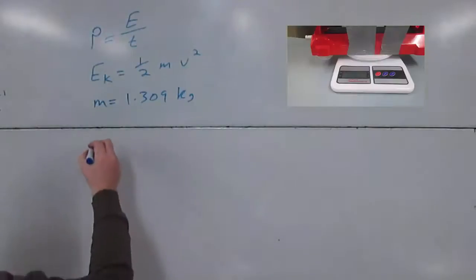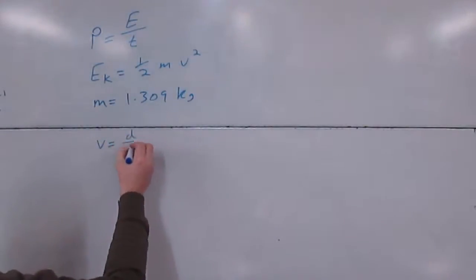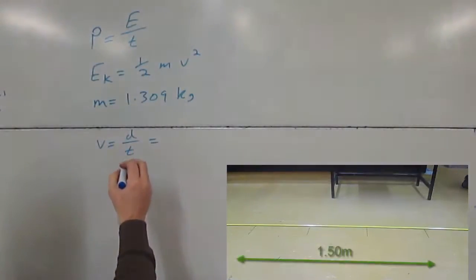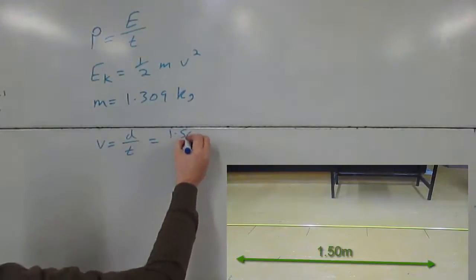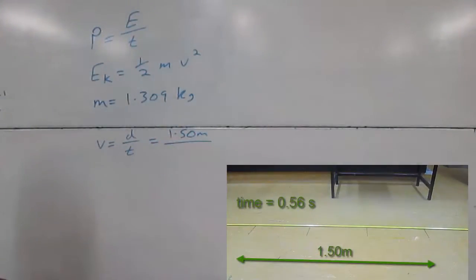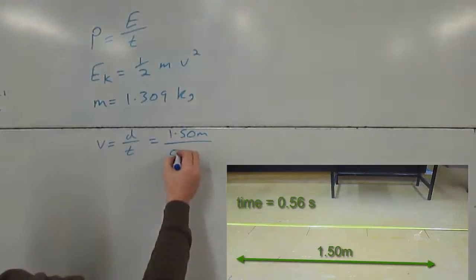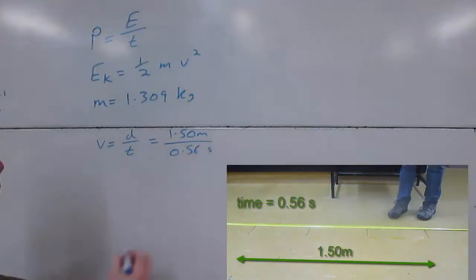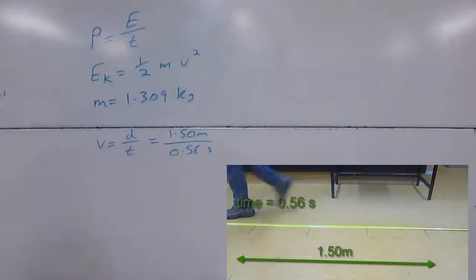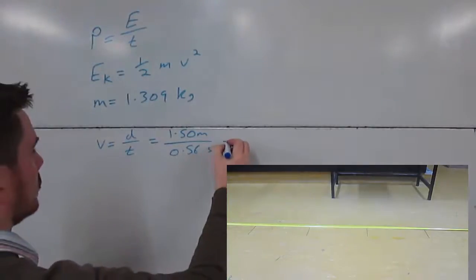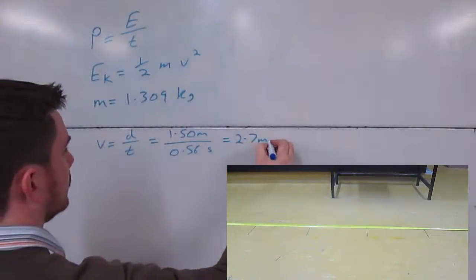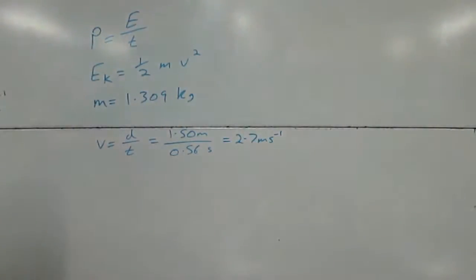To work out the speed, we use v equals distance divided by time. The distance after the rocket had accelerated was 1.50 meters divided by a time of 0.56 seconds. That comes out approximately 2.7 meters per second. I'll round my numbers in this example so I don't have to write a lot of digits on this board.